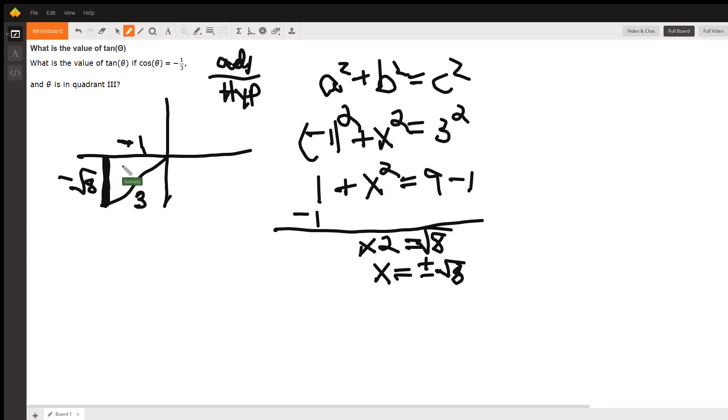All right, now that we have our three sides figured out in quadrant three, what is the tangent of theta? And then the tangent—we know theta is here, so it's going to be the opposite over the adjacent.